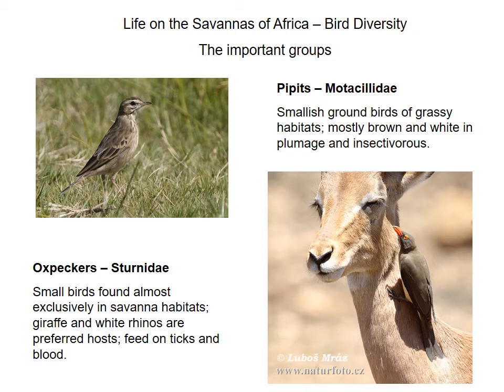The oxpeckers, which are in the starling family, are smallish birds found almost exclusively in savannah habitats. The red-billed oxpecker is an example, seen here on an impala. They use various hosts — giraffe and white rhinos are preferred — and tend to feed on ticks and other external parasites. They are also known to feed on the blood of an individual if it has a wound on its body.